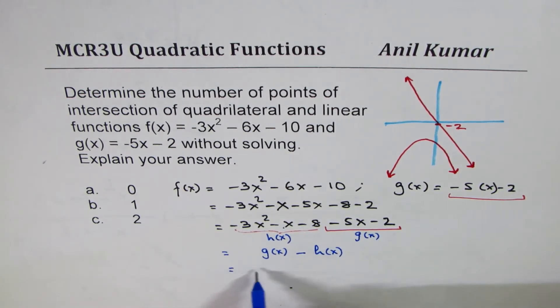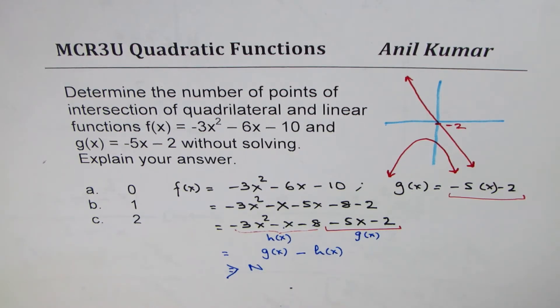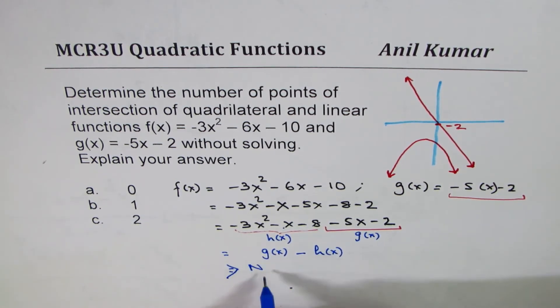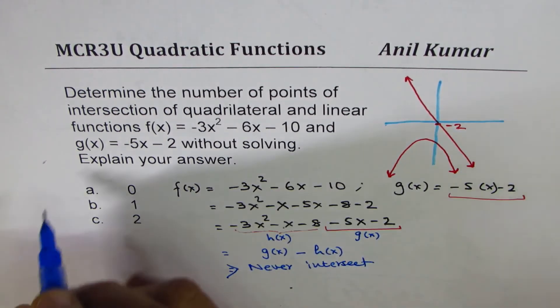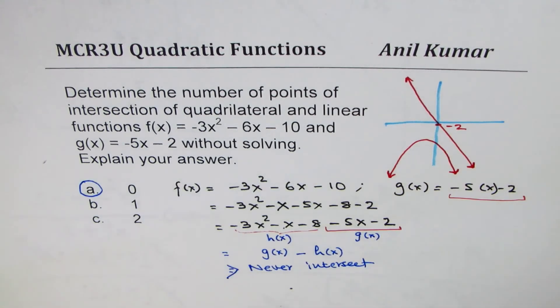However, there'll be a gap between the two because of this function. So that means they will never intersect. This implies that the two functions never intersect—this gap is always going to be there. So the answer is a: the point of intersection is zero between them.